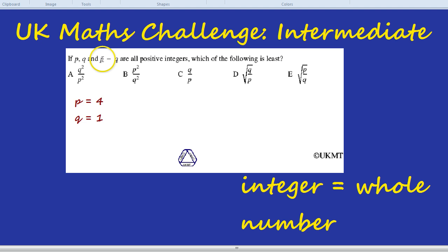Why is that? If P take away Q is a positive integer, that means P has to be bigger. If Q is bigger, so for example, if Q was 4 and P was 1, then 1 take away 4 would not be a positive integer. So P would have to be bigger in this case.